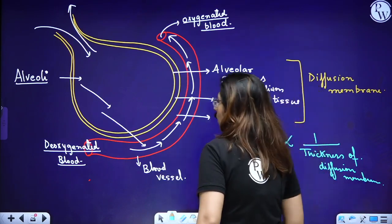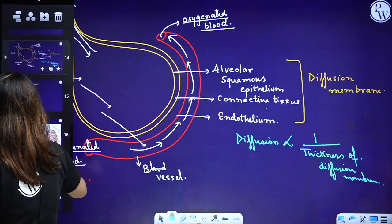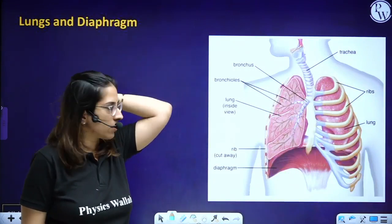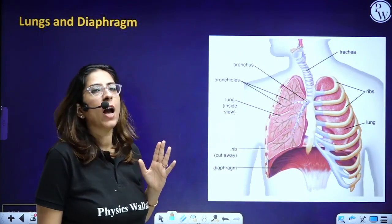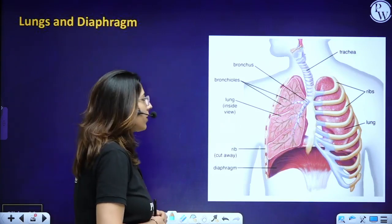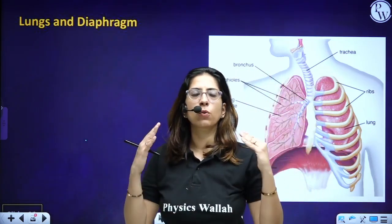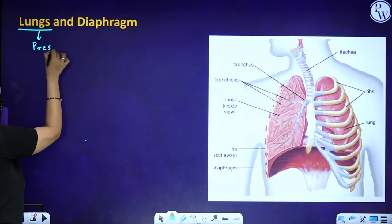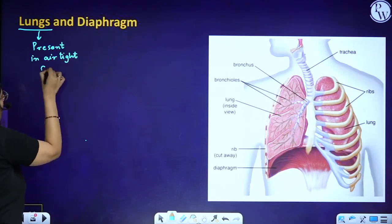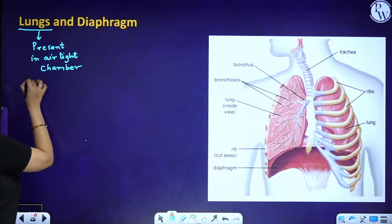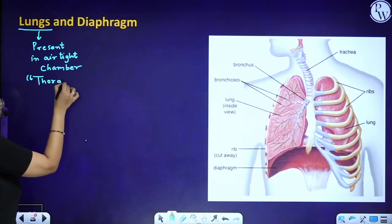Now let's talk about the lungs externally. The lungs are present in an airtight chamber called the thoracic chamber. Below this is the abdominal chamber. The structure separating them is a muscular structure called the diaphragm. Because of the diaphragm, the thoracic chamber forms an airtight chamber.